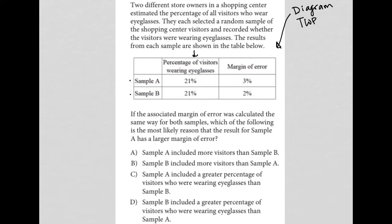The first column of data here is the percentage of visitors wearing eyeglasses. Looks like they're the exact same for both samples. And then my next column is margin of error, and they're off by 1%. Sample A has a 3% margin of error. Sample B has a 2% margin of error.